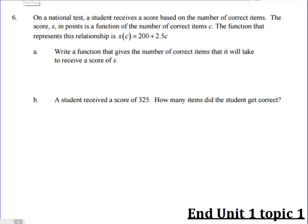Alright, alright, I think there's one more problem and that's the end of Unit 1 Topic 1 video. Very similar to the last one. On the national test, the student receives a score based on the number of correct items. The score S in points is a function of the number of correct items C. The function that represents this relationship is given here. Alright, so write a function that gives the number of correct items that it will take to receive a score of S. So now we're saying S is our variable in here, and we want to find the number of correct items.